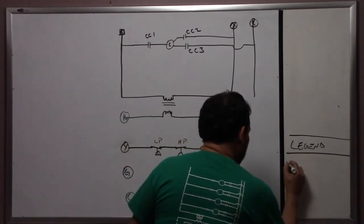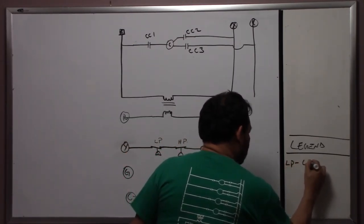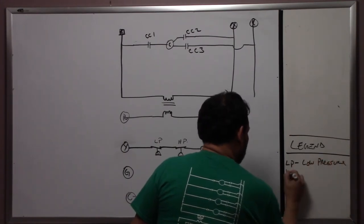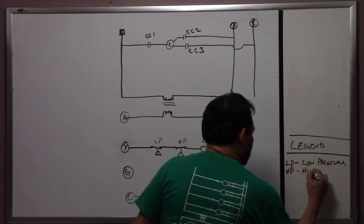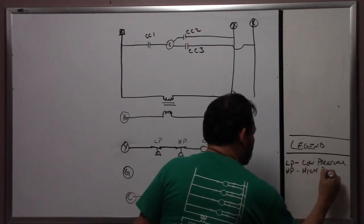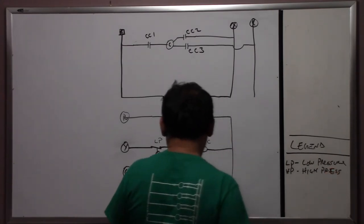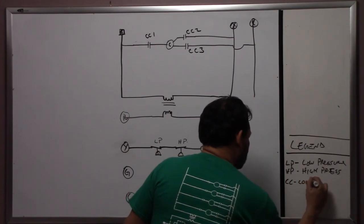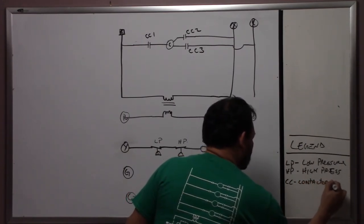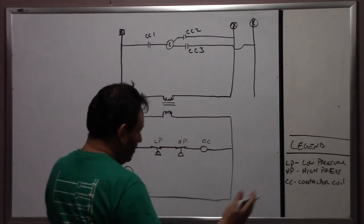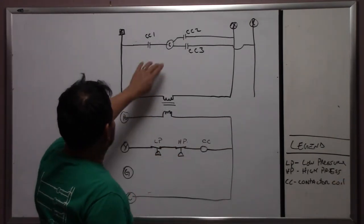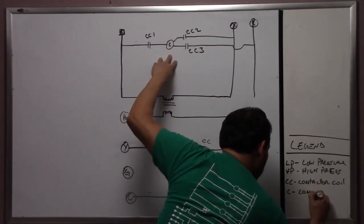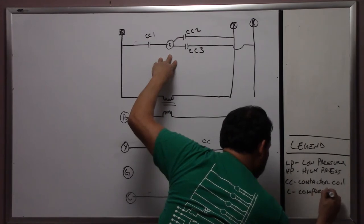We know the LP, that's low pressure. We have HP, which is high pressure. Then we have CC, the contactor coil. And you have your C, which will be your compressor.